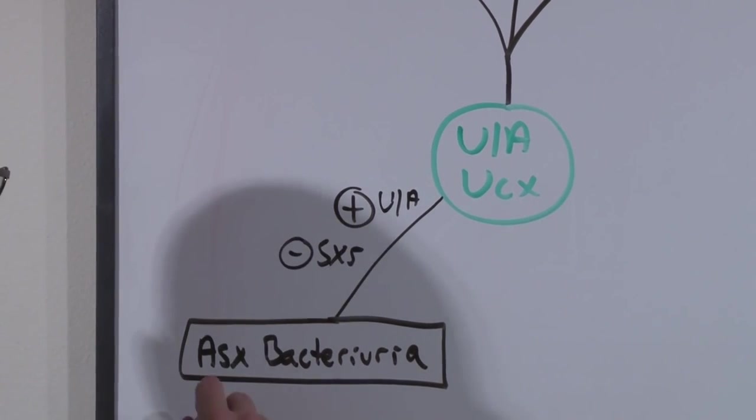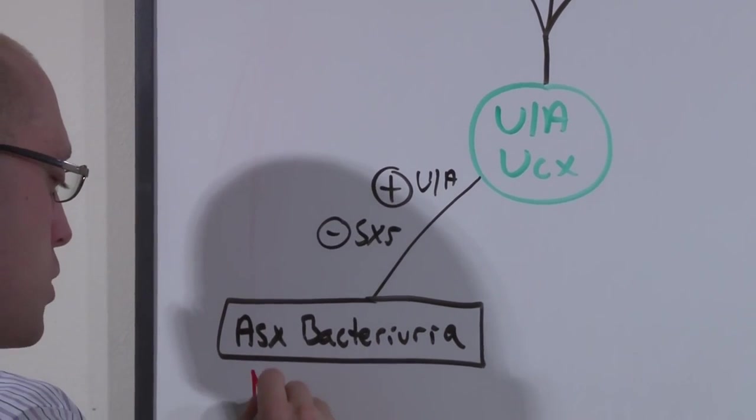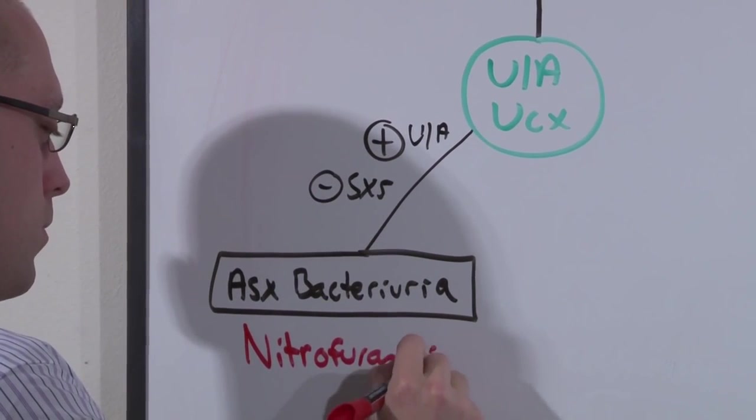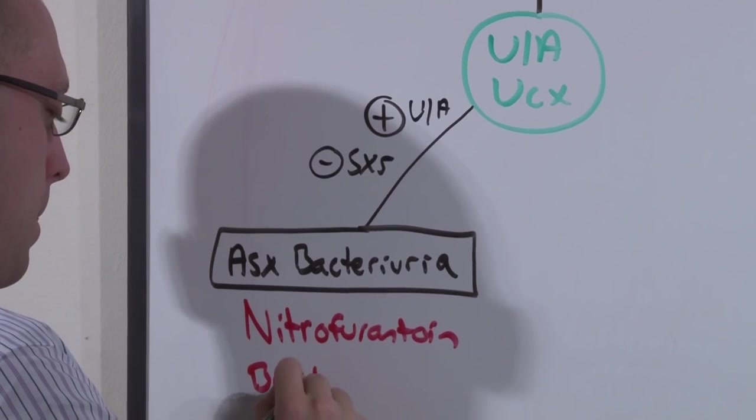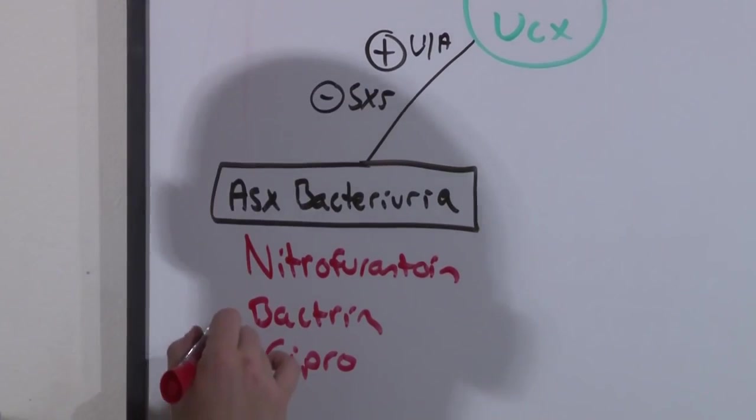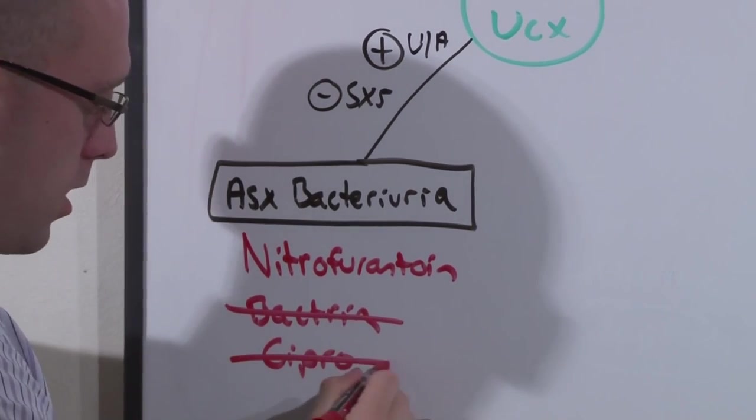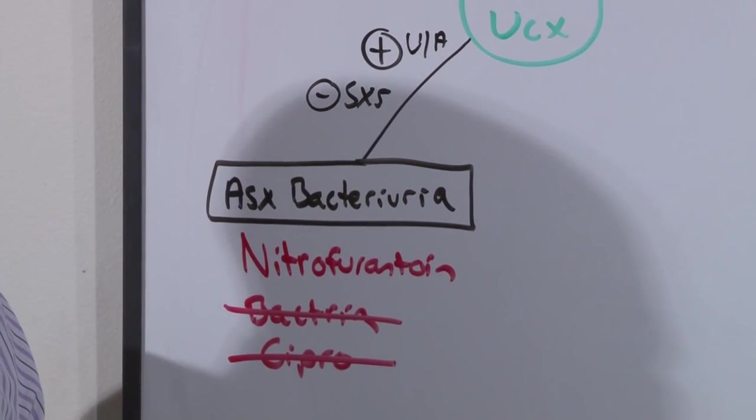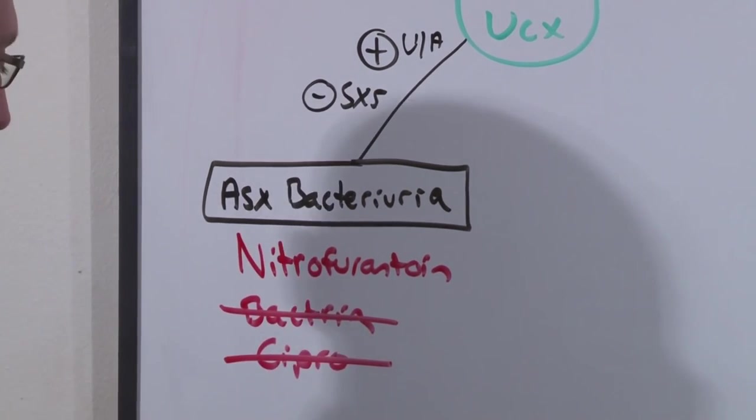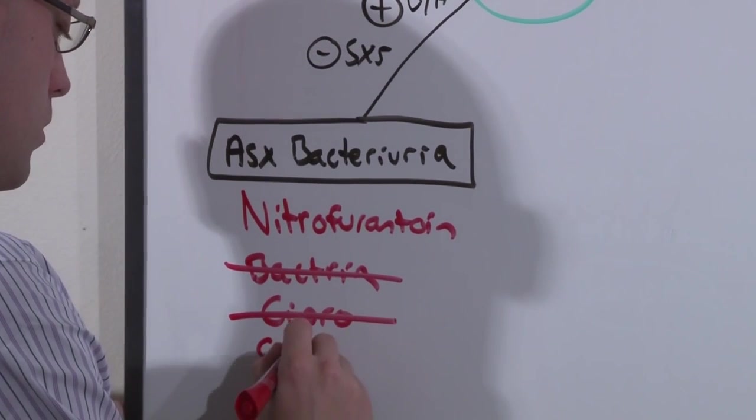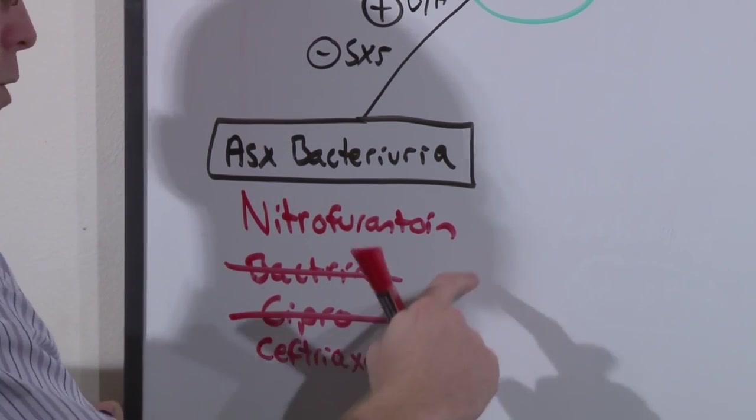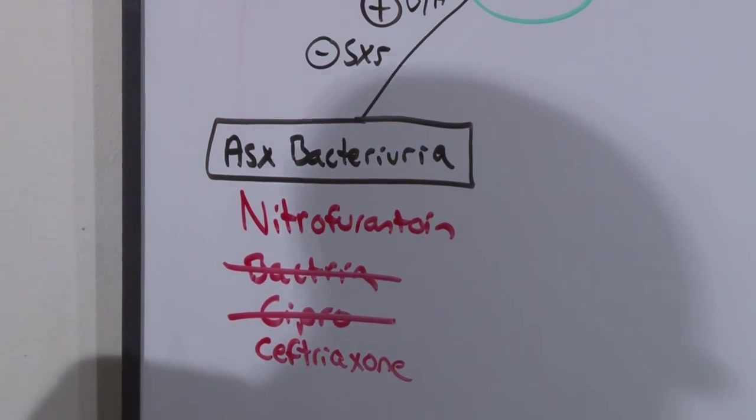Your normal options for treating UTIs are nitrofurantoin, Bactrim, and Cipro. The problem is that Bactrim and Cipro are not used in pregnancy. So you're really only left with nitrofurantoin. You can also use ceftriaxone if the organism comes back resistant to nitrofurantoin.